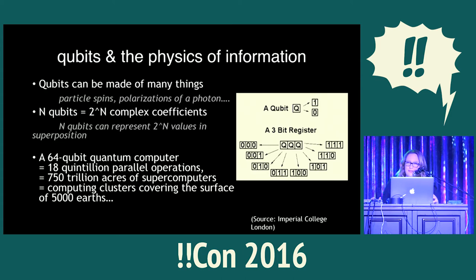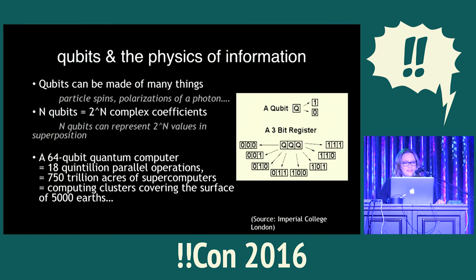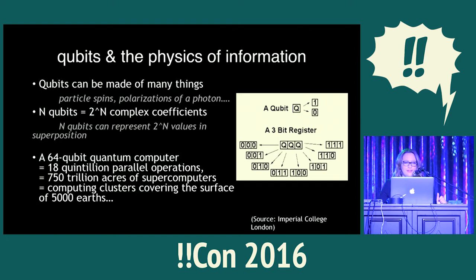One of my favorite thought experiments about quantum computing: let's say you have a 64-qubit quantum computer — keeping in mind that a qubit can be like a particle of light, so 64 qubits you could easily fit in your hand. That would be 18 quintillion parallel operations. If we were to run that on conventional supercomputers as of a couple years ago, this would cover something on the order of 750 trillion acres with supercomputers — computing clusters covering the surface of 5,000 Earths.